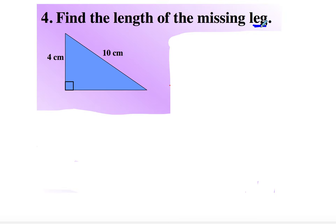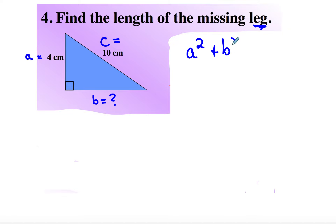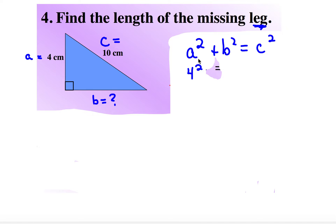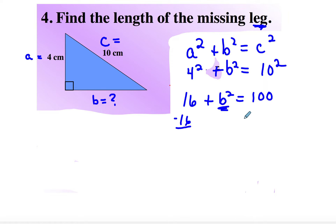Now we have to be careful because we're trying to find the missing leg. This has to be our C because the hypotenuse is always the longest side and it's always C. This is a leg — we'll let that be A — and this is also a leg, but we don't know what it is. When we do the Pythagorean theorem, we have to make sure we put them in the right spot. So I get A squared plus B squared is equal to 10 squared, which gives 16 plus B squared is equal to 100. I'm going to subtract 16 from both sides.